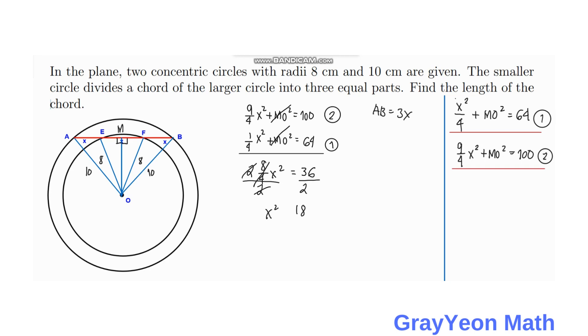So x squared equals 18. We can write 18 as 3 squared times 2. If we take the square root of both sides, we have x equals the square root of 3 squared times 2. This becomes x equals 3 square root of 2.